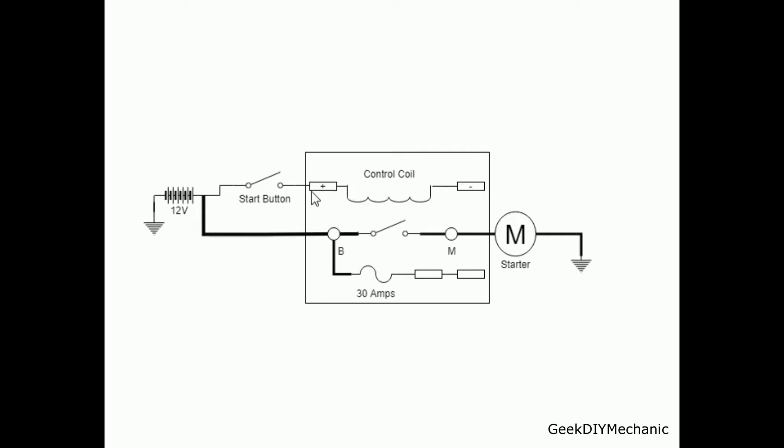Like a classic relay, when current is allowed to flow through this coil, it closes this switch, which then allows current to flow from B to M. And in this case, it was hooked to the starter motor, would then engage the starter.